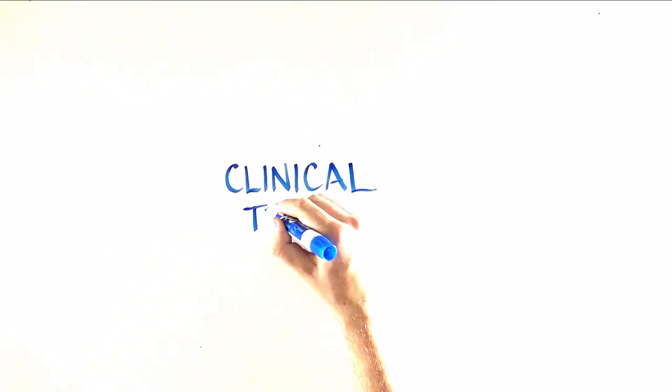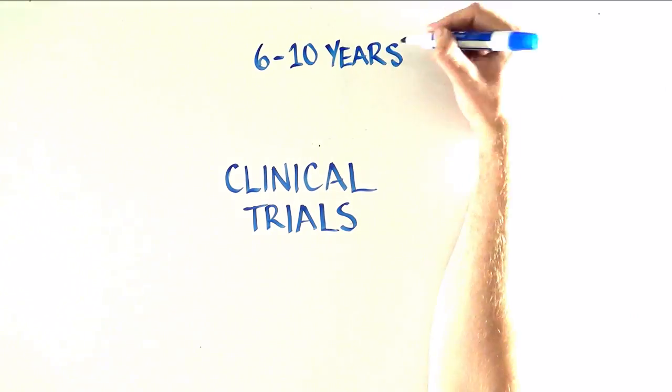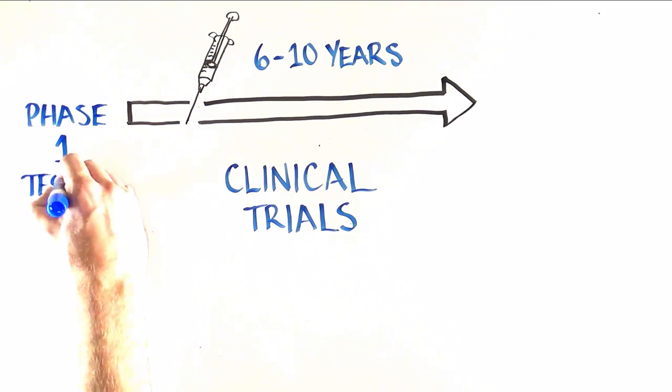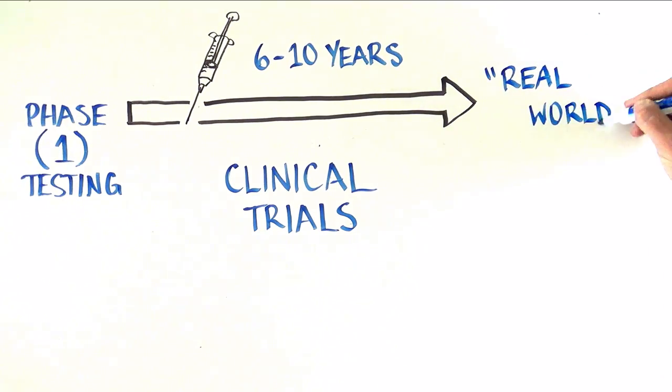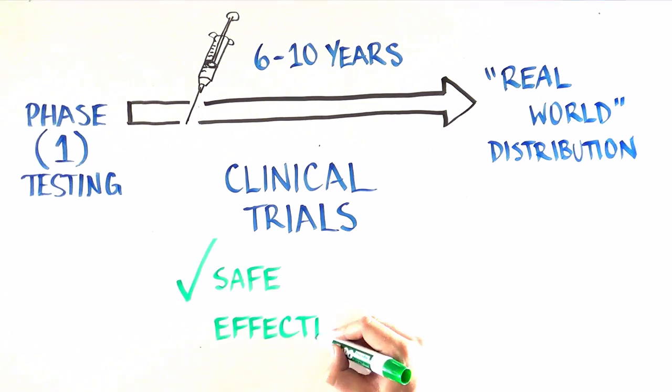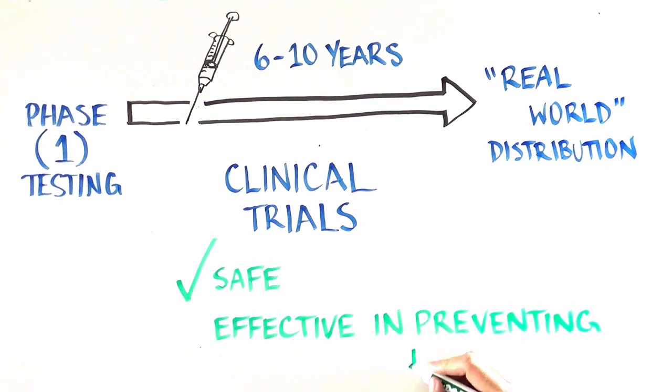In the best-case scenario, it could take 6-10 years for a promising vaccine to move from Phase 1 testing to real-world distribution. Often, it takes longer. But clinical trials are absolutely necessary to determine that a vaccine is safe and effective in preventing new infections.